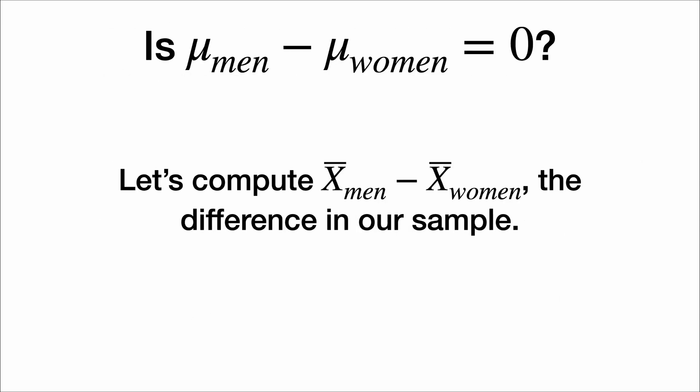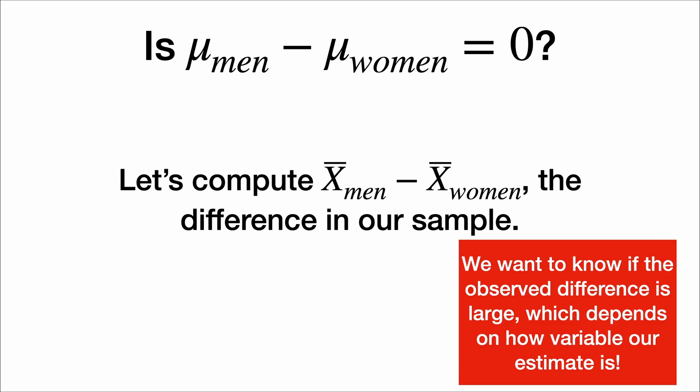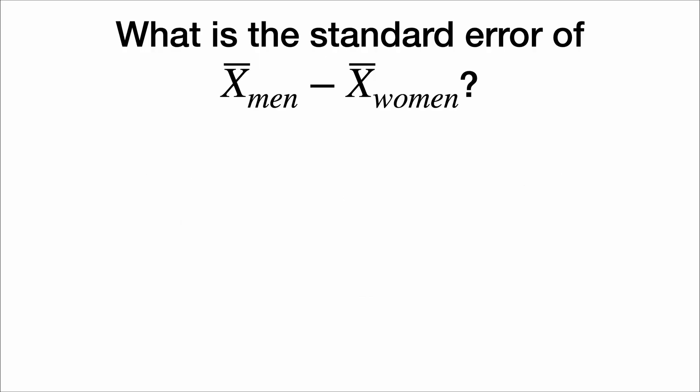Well, to estimate the true difference in the averages, we compute the difference we see in our sample: the average height of men minus the average height of women. We want to know if the observed difference is large, and whether we're going to consider it large depends on how variable our estimate is. The t-statistic that we calculate is the observed difference over the standard error. And what is the standard error of the difference of means?